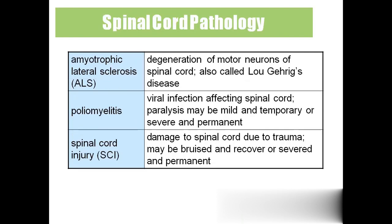'ALS' — amyotrophic lateral sclerosis — involves degeneration of motor neurons. Motor neurons travel from the brain to the muscles and obey the brain's commands. If degeneration of motor neurons occurs, the person will lose voluntary control over the muscles. We also call this Lou Gehrig's disease, after its discoverer.